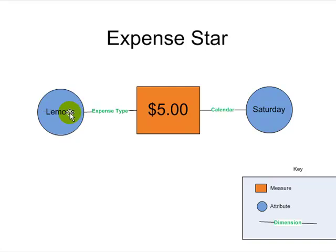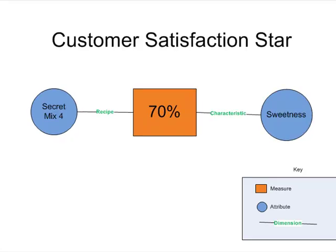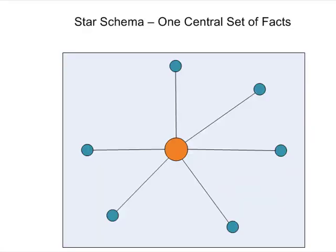Another star schema that might exist in my lemonade stand is the customer satisfaction star. So here I can see a percentage that tells me the satisfaction of the customers based on the recipe that I used that day, and they're analyzing a specific characteristic—in this case, sweetness. So I know that for secret mix four, the sweetness characteristic causes a 70% satisfaction level.